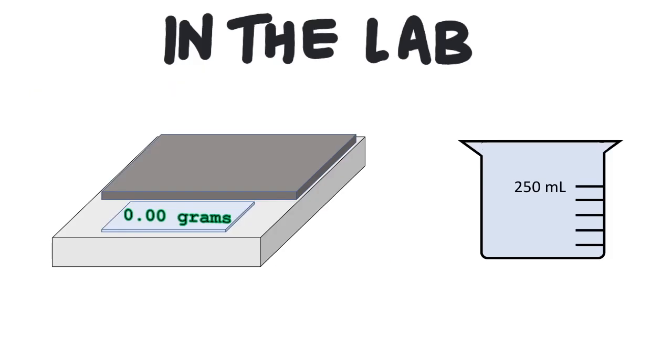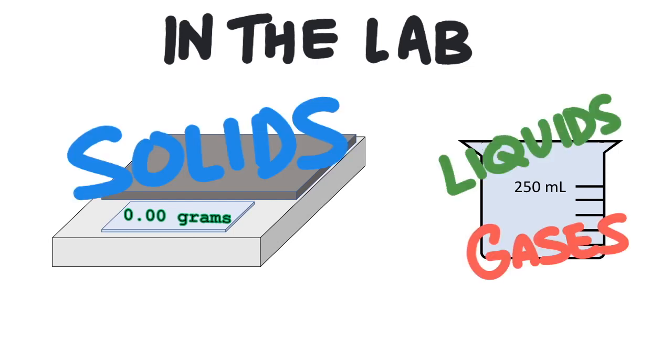In the lab, we don't use units of moles when measuring amounts of things. For solids, we usually use grams, and for liquids and gases, we usually use liters. So we need to be able to do stoichiometry with those units.